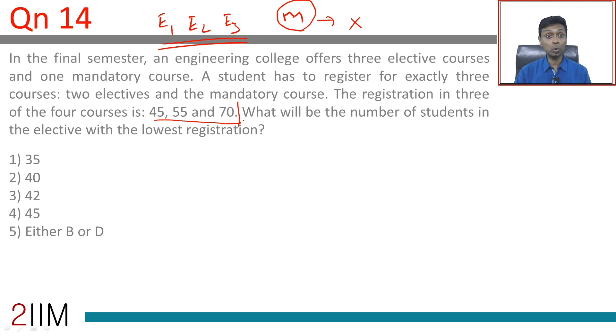Each student has to elect two electives, so the sum of all elective courses put together should be 2x. You could have a scenario where this 70 is the mandatory registration and these are two of the three electives.